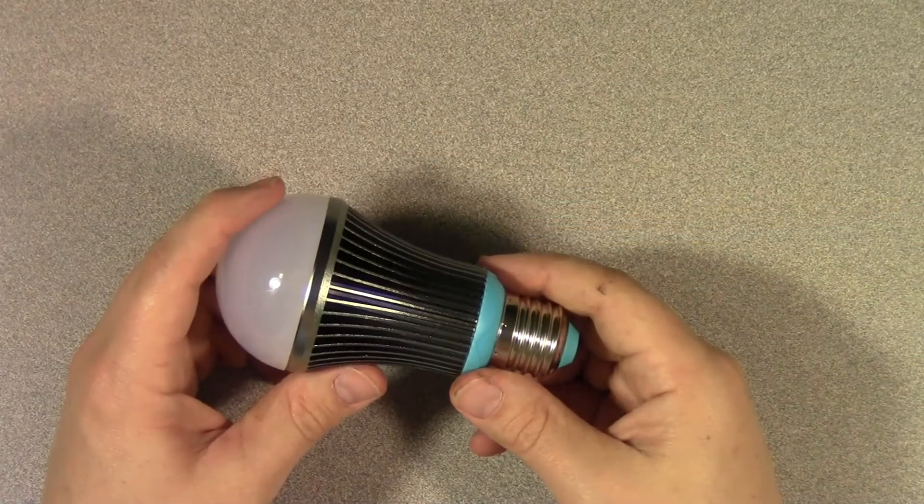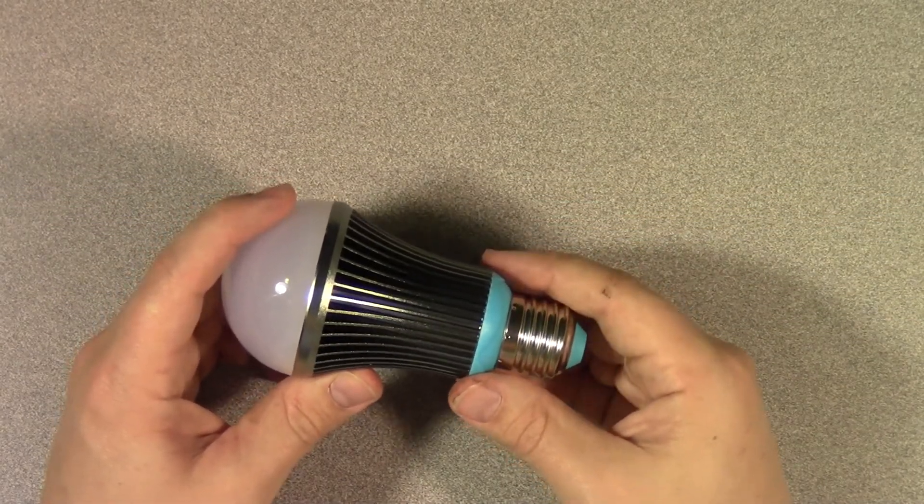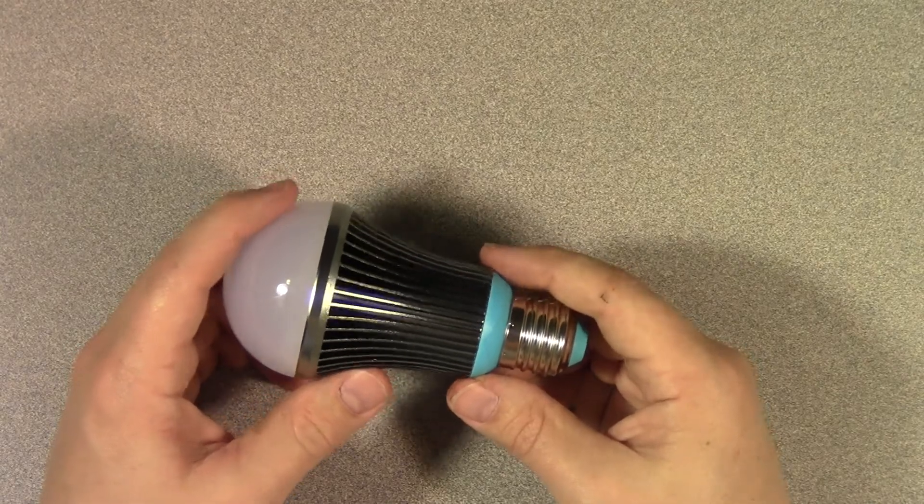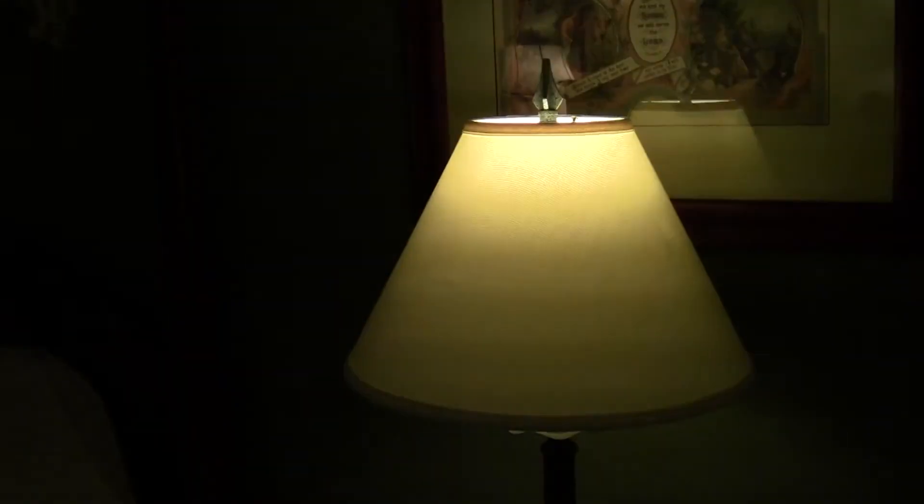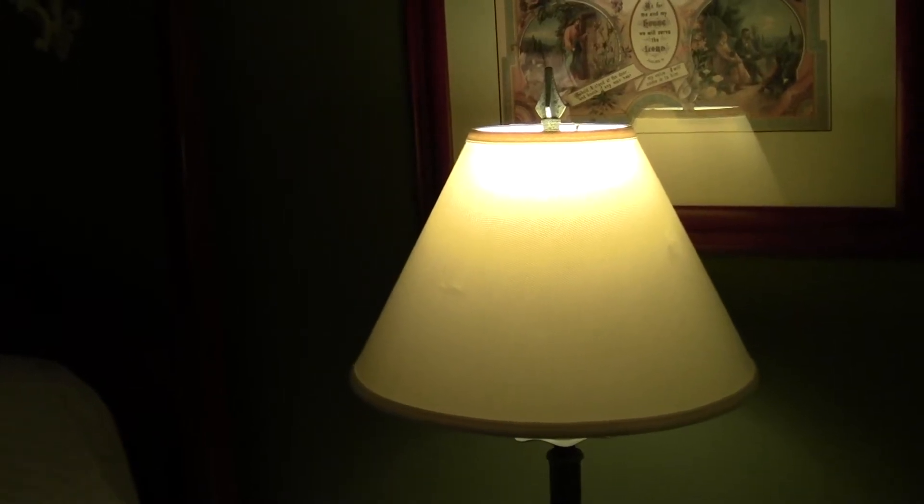This bulb also has another mode called moonlight, which is slightly different from the midnight mode. You activate moonlight mode by turning the light switch on three times. So you go on, off, on, off, and finally back on. And in this case, you'll see the bulb flicker twice to indicate that you've successfully activated moonlight mode.